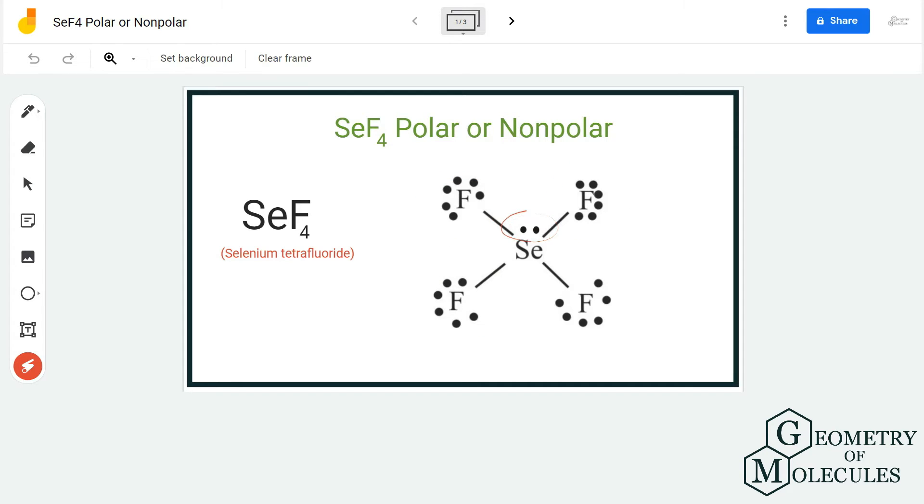Generally, the molecules in which central atoms have lone pairs are asymmetrical, and due to which there is polarity in this molecule. But to confirm it further, we are going to look at its shape.